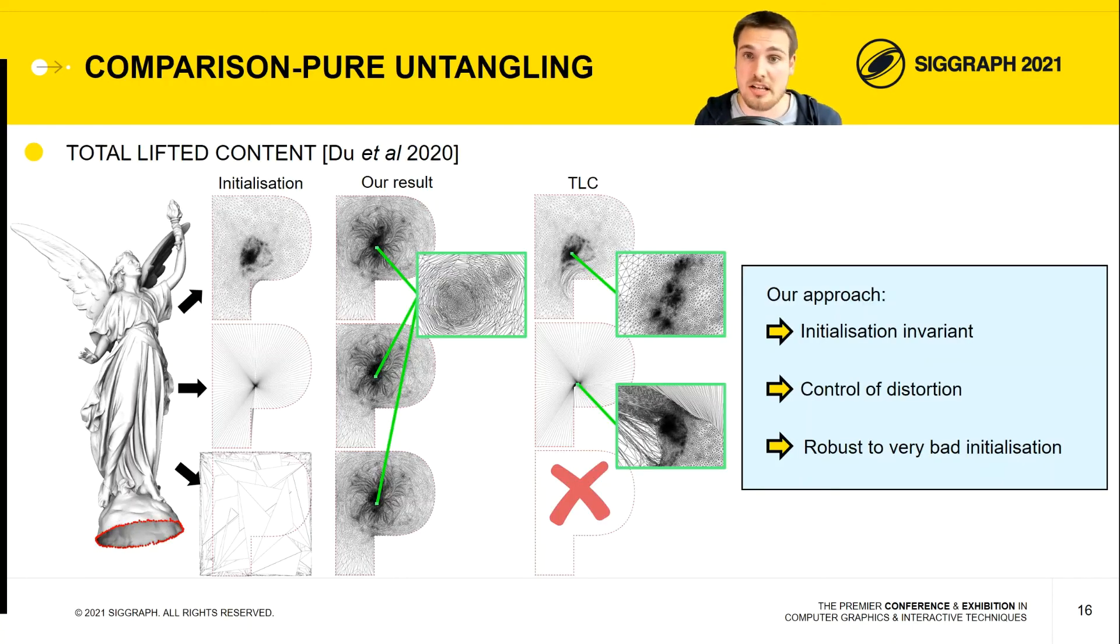Finally, to compare ourselves to the Total Lifted Content of Du et al., which is currently the state of the art, we can see that our approach is invariant to the initialization, has very good control of distortion, and is more robust to very bad initialization.